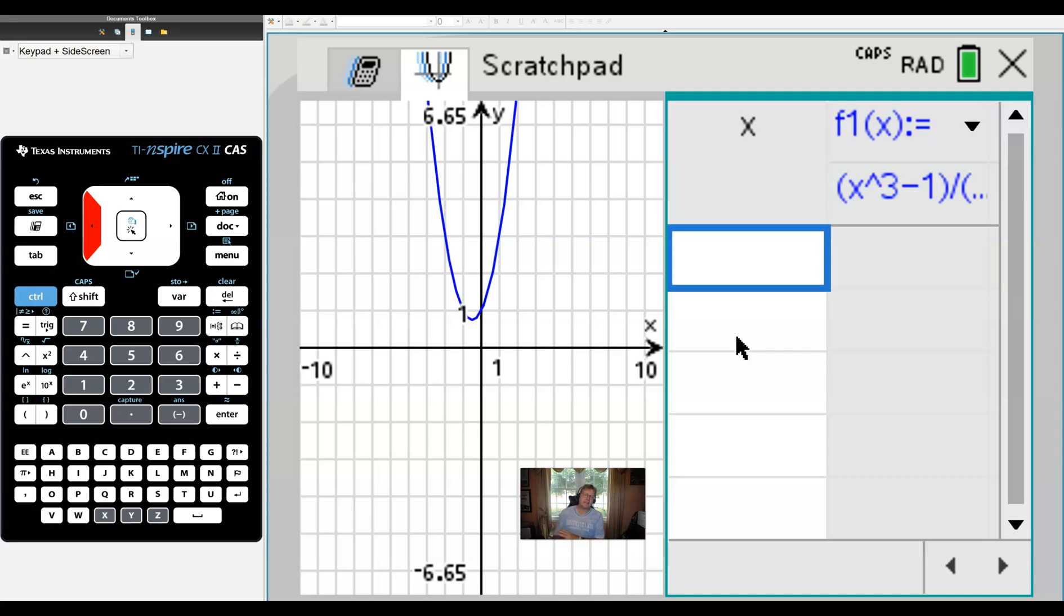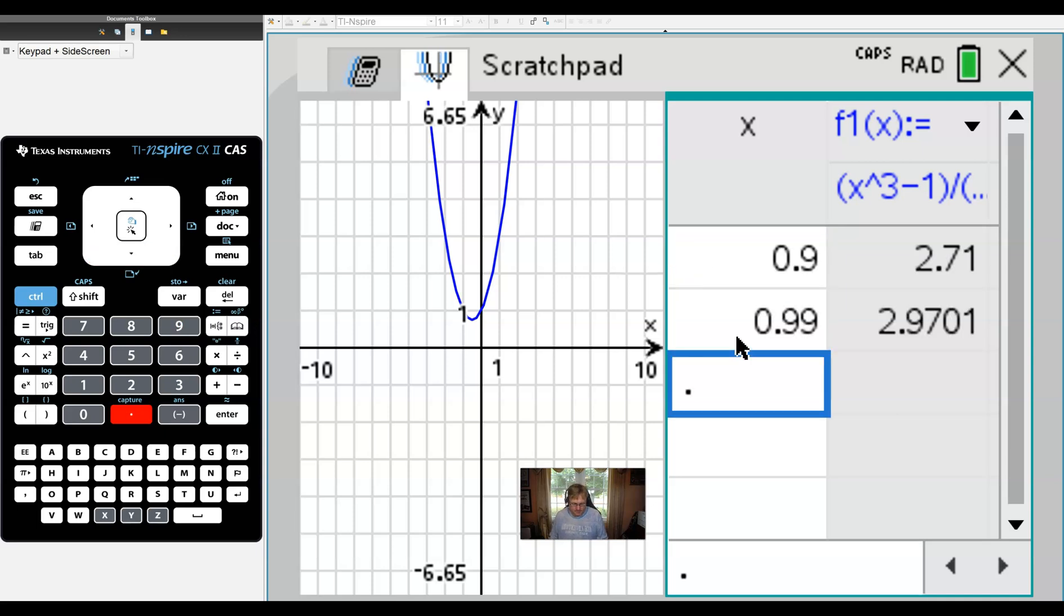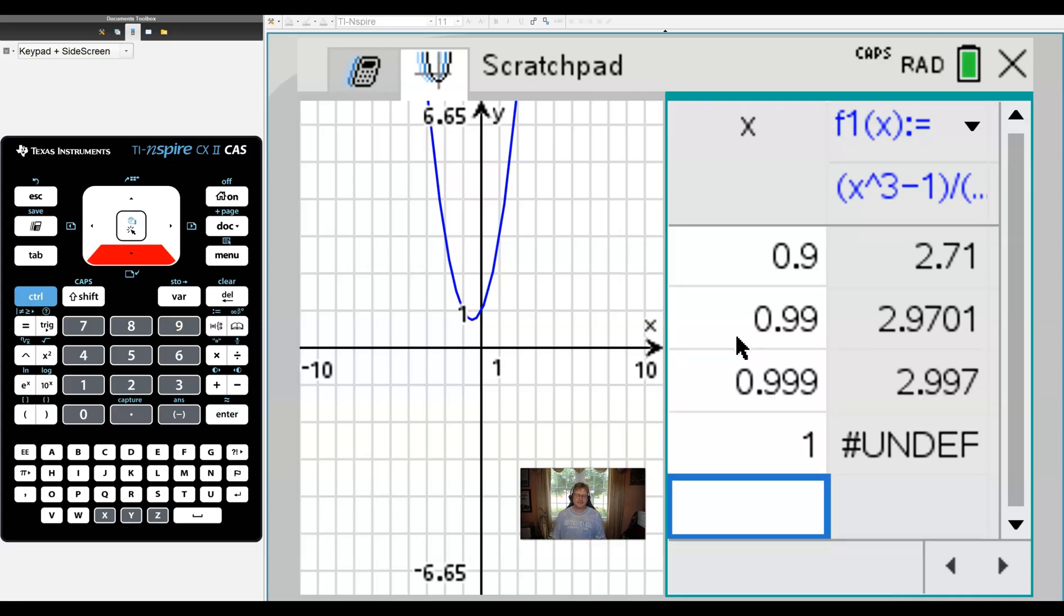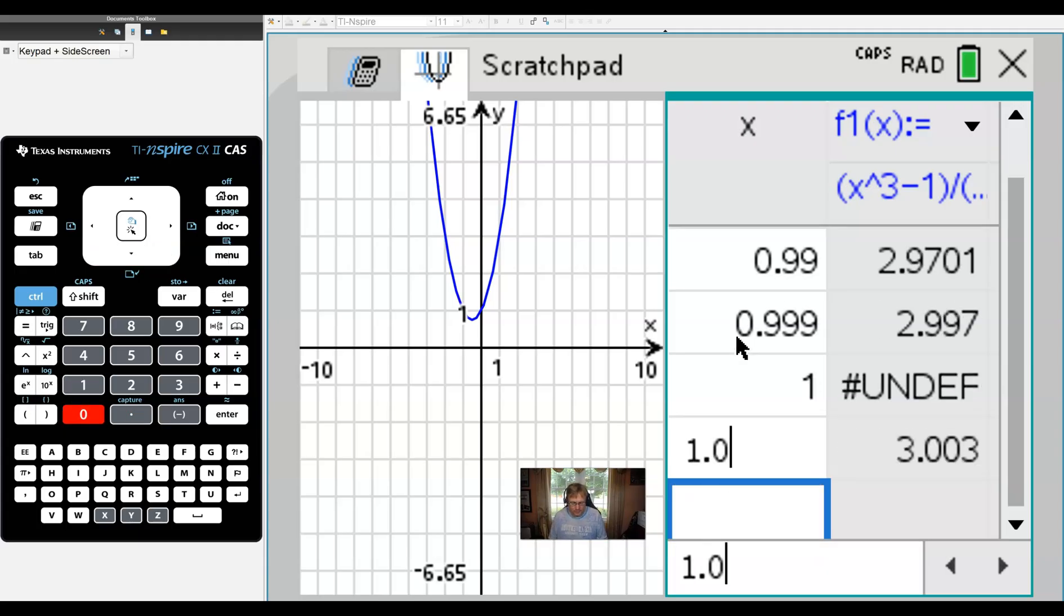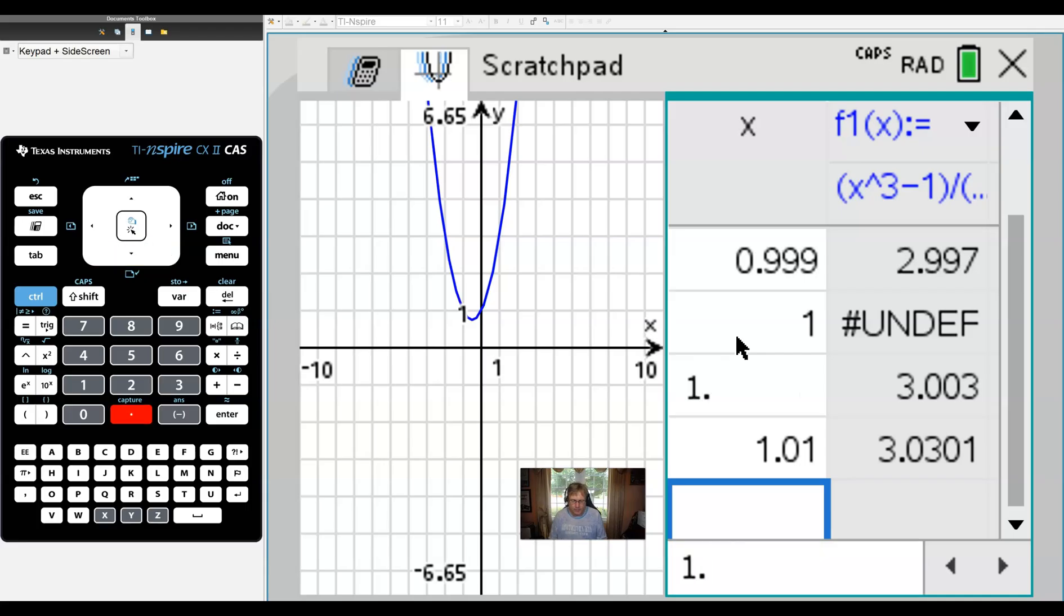Now, if you go from the far left to the far right, as X approached that 1, you might see that we had 0.9, 0.99, 0.999. And we're going to go ahead and put 1 in there just for kicks. Oh, well, that's interesting. And then we put 1.001, 1.01, and then finally 1.1.